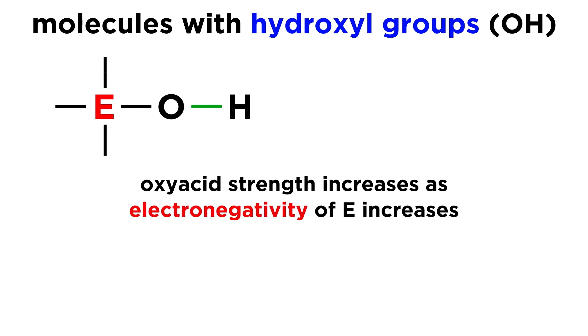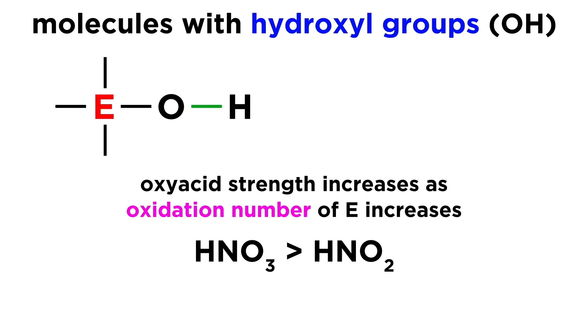Apart from the strength of an oxyacid increasing along with increasing electronegativity for the central atom, acidity will also increase as the oxidation number of the central atom increases. Nitric acid is a stronger acid than nitrous acid because the nitrogen is plus 5 rather than plus 3, and sulfuric acid is stronger than sulfurous acid for the same reason.